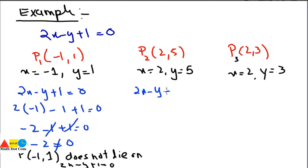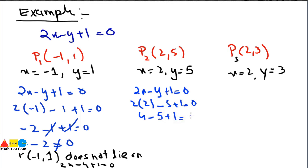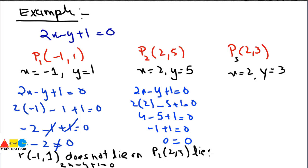Now for P2, putting x equals 2 and y equals 5 into 2x minus y plus 1 equals 0: 4 minus 5 plus 1 equals 0, giving minus 1 plus 1 equals 0, and 0 equals 0. This means P2(2, 5) lies on the line 2x minus y plus 1 equals 0.